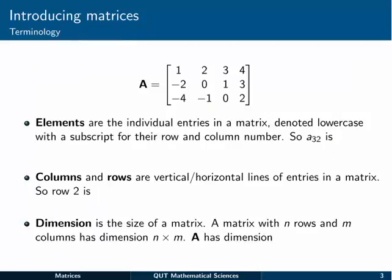So let's talk a little bit more about terminology. The elements, as I said, are the individual entries in a matrix. We usually denote them in lowercase with a subscript for their row and column number. So here, little a means the third row and second column of the matrix A. So we go to the third row, and the second column, and we find that A32 is equal to minus 1. A34 would be equal to 2, and A13 would be equal to the number 3.